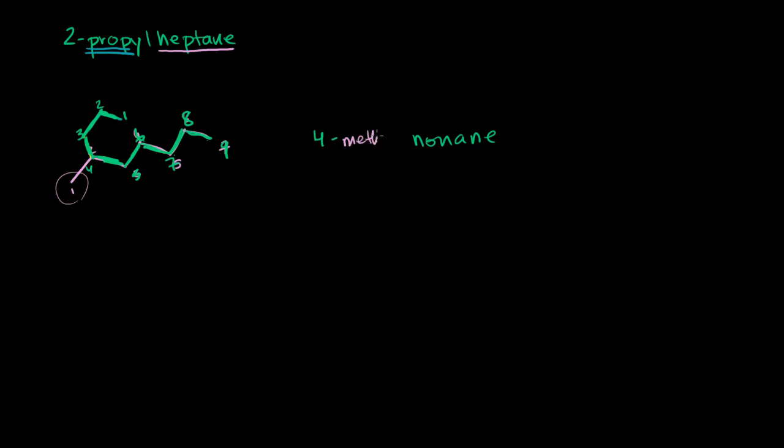4-methylnonane. So it was brought up, I think the username is Minoc2, and they correctly corrected me that there would never be such a thing as 2-propylheptane. I just made that up. If someone were to label this molecule, they would call it 4-methylnonane and ask you to draw it.